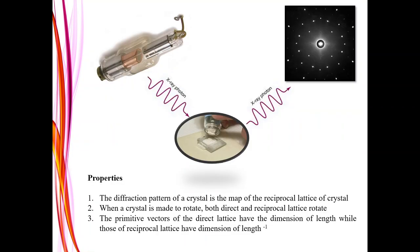So what is happening is that when an X-ray impinges on a sample — which can be thought of as a slit — the X-rays get diffracted and we get a pattern in space, as shown in the figure. That pattern is actually the reciprocal lattice representation of the slit. Some key properties: the diffraction pattern of a crystal is the map of its reciprocal lattice. If the crystal is rotated, both the direct and reciprocal lattice rotate. The primitive vectors of the direct lattice have dimensions of length, while those of the reciprocal lattice have dimensions of length⁻¹.